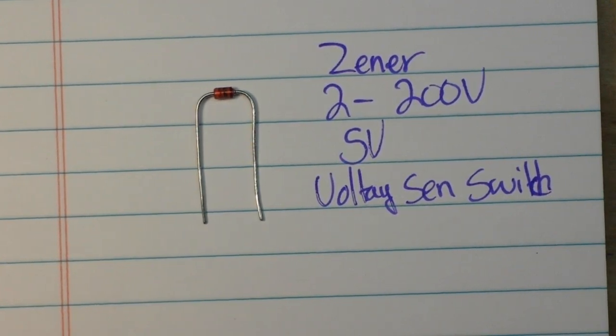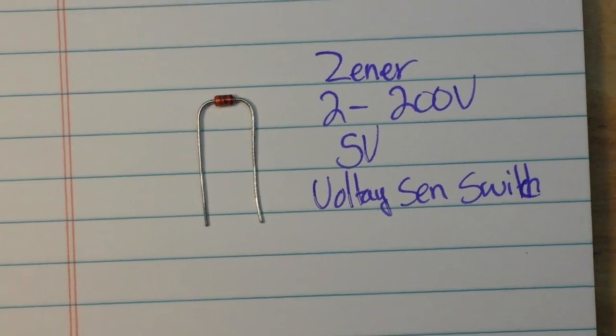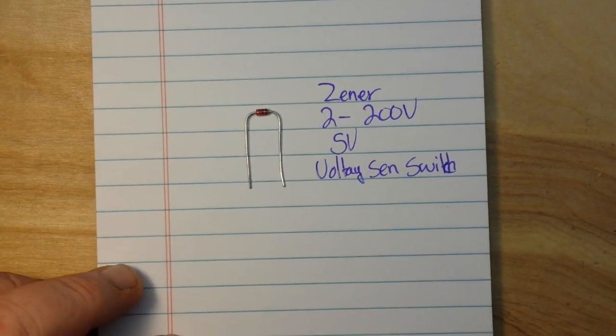Zener diodes are incredibly useful. One of the main things that they're used for is to create a simple voltage regulator. Now yes, they are very lossy and they are going to convert a lot of power to heat, but they're incredibly simple to use.